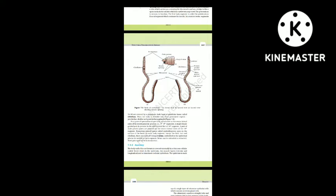The body is divisible into three prominent regions: preclitellar, clitellar and postclitellar segments. Four pairs of spermathecal apertures are situated on the ventro-lateral sides of the intersegmental grooves of segments 5-9. A single female genital pore is present on the mid-ventral line of the 14th segment. A pair of male genital pores is on the ventro-lateral sides of the 18th segment. Numerous minute pores called nephridiopores open on the body surface. In each segment (except the first, last and clitellum) there are rows of S-shaped setae embedded in epidermal pits, whose principal role is locomotion.